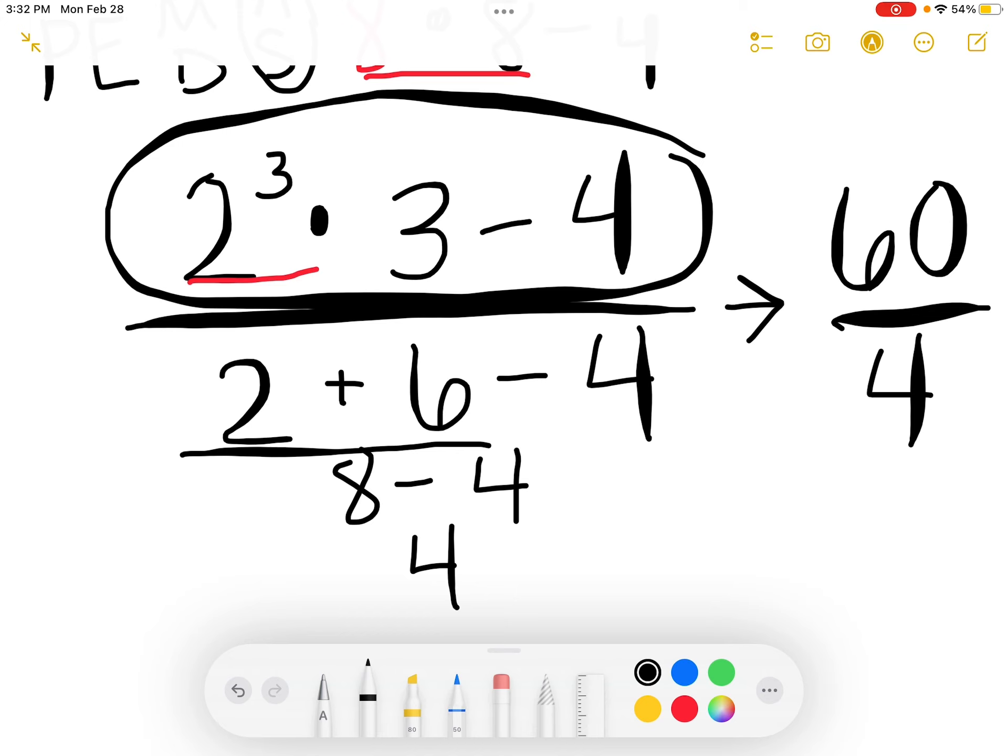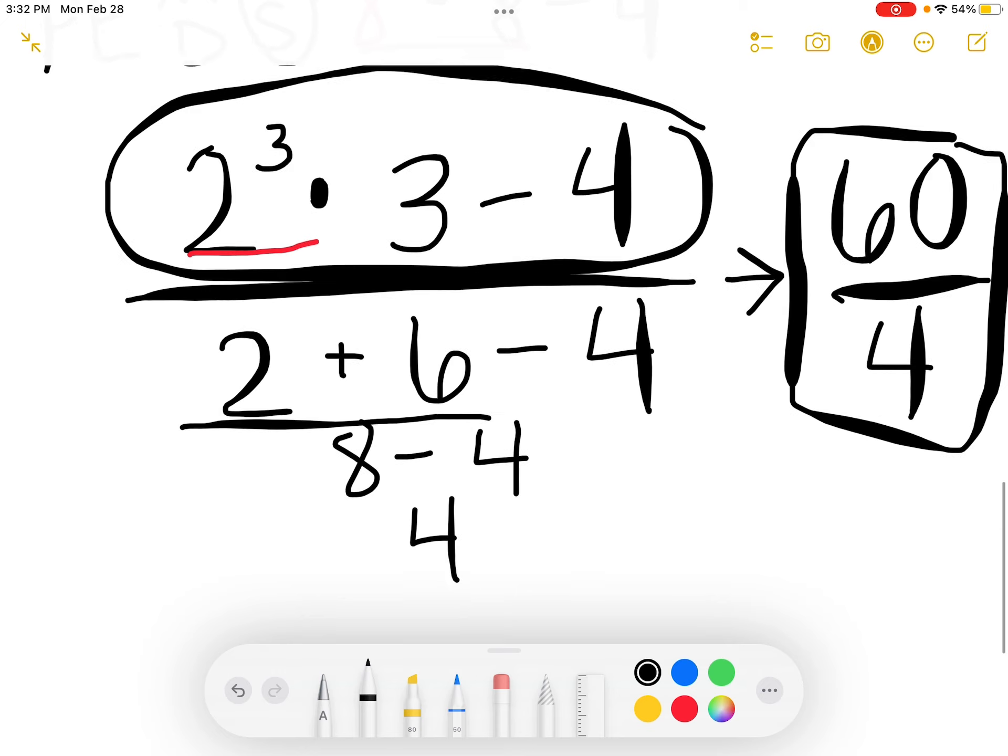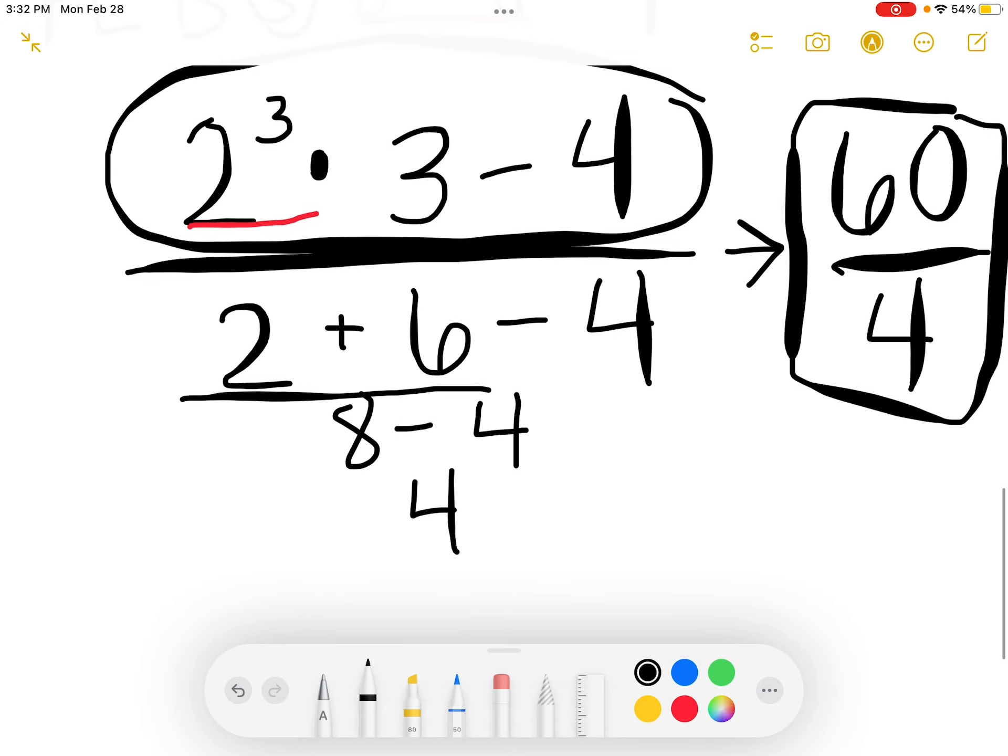The very last step is to just take these two numbers and actually divide, because a fraction bar means to divide. This should divide nicely for us, and if it doesn't, that's an indicator we may have made a mistake. 60 can be divided by 4. It can be divided by 4 15 times. So 60 divided by 4 simplifies there to a 15, and that is our final answer.